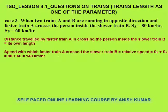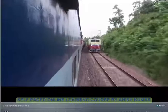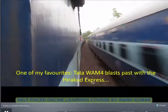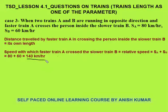Case 3 is when two trains are running in opposite directions and the faster train A crosses the person inside the slower train B. You can see the train coming from the opposite direction is the faster train. Speed will be the relative speed, that is 80 plus 60, equals 140 km per hour — the train will cross this person at 140 km/h. The distance traveled by the faster train to cross the person is equal to the length of the faster train, since whenever a train overtakes a person, the distance equals its own length.